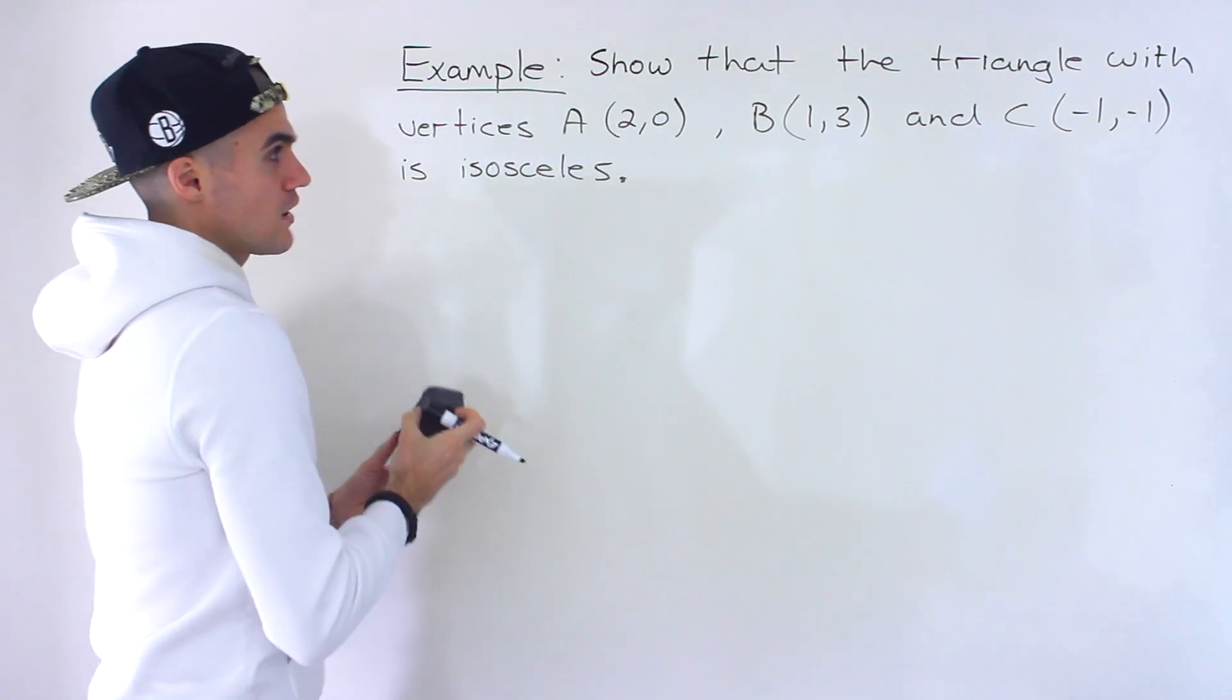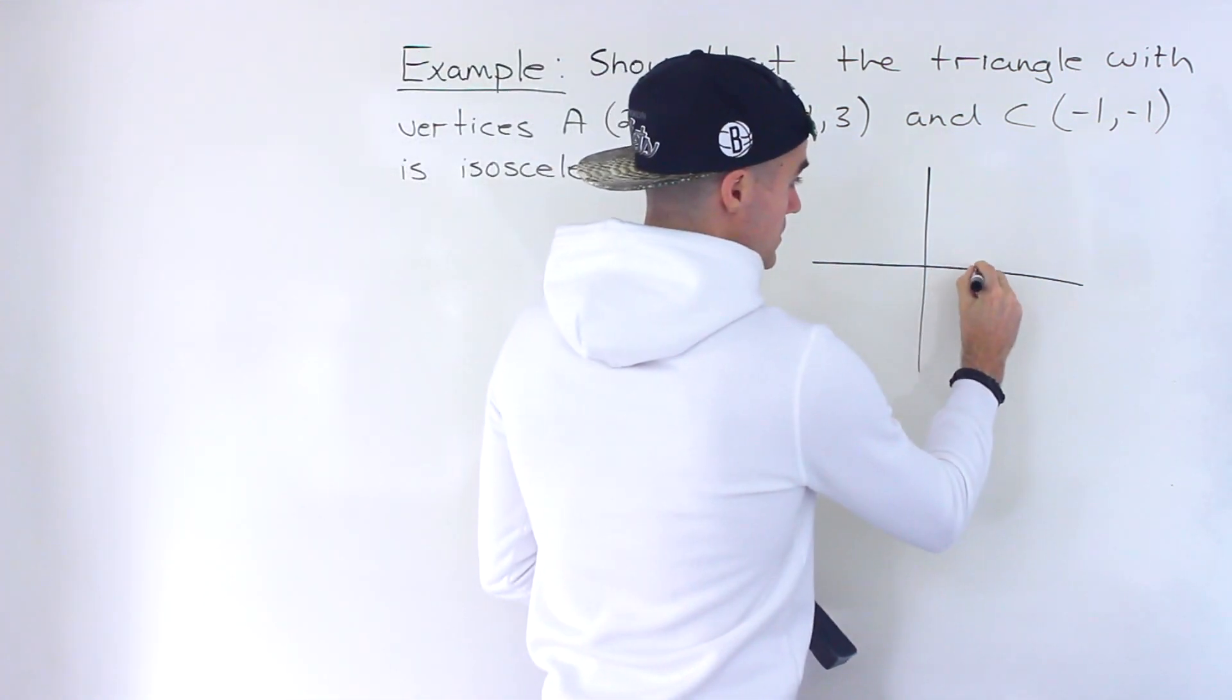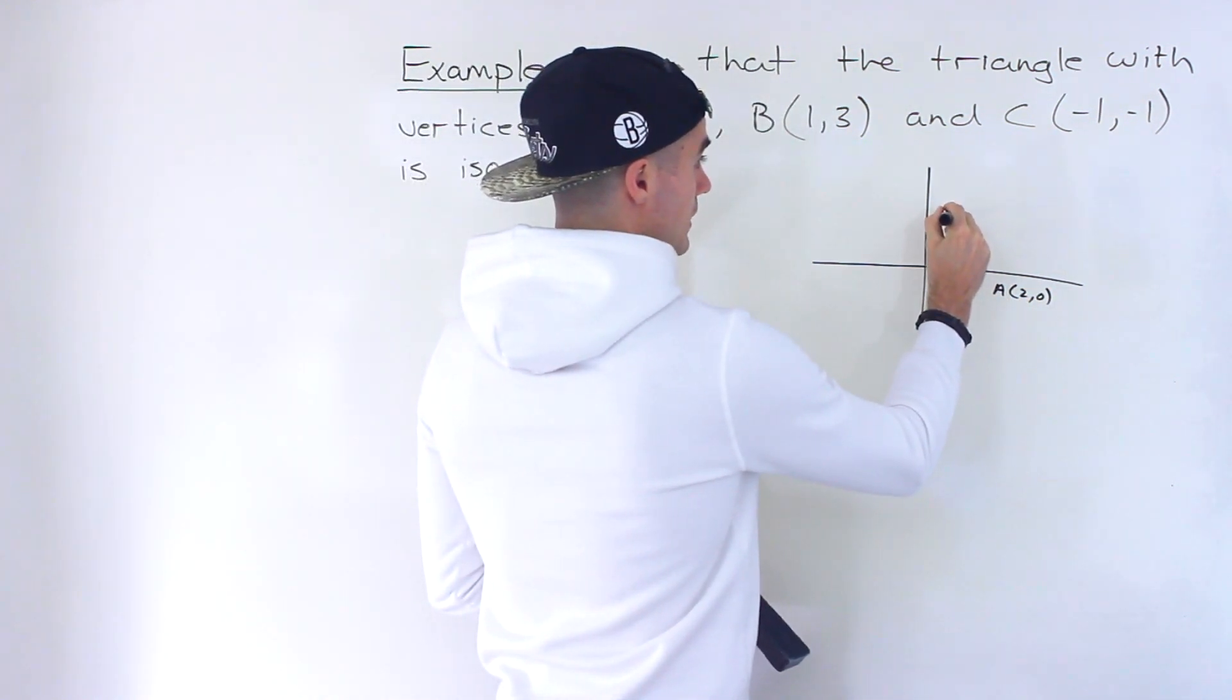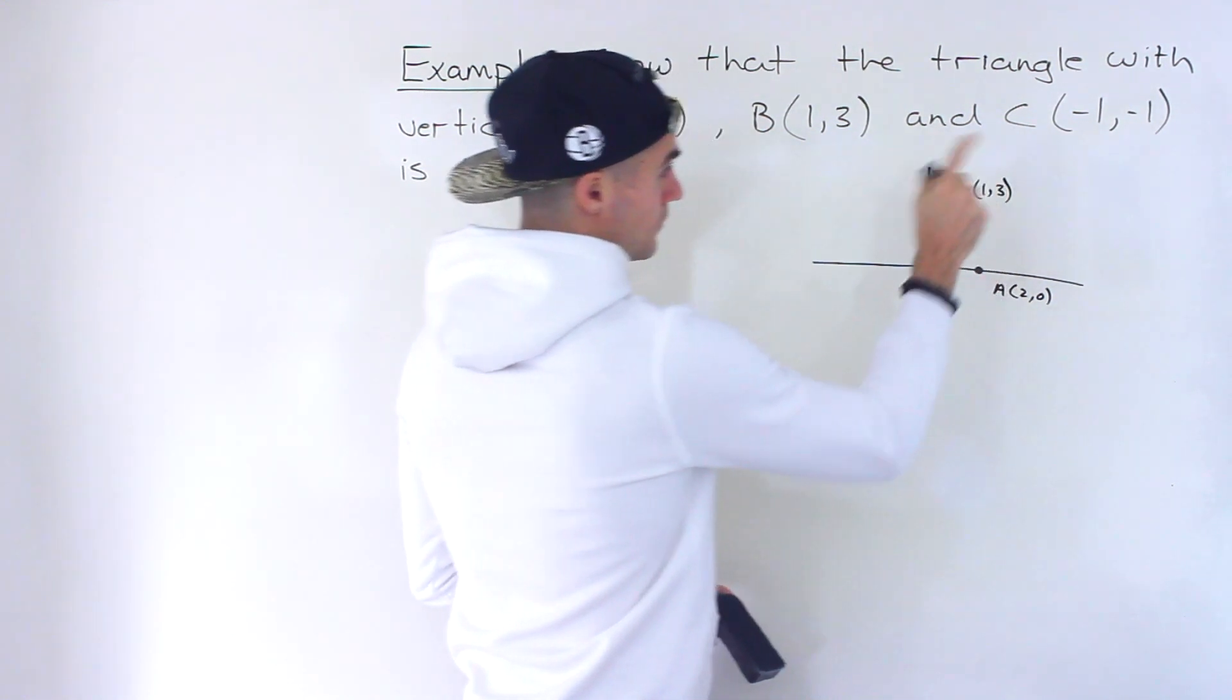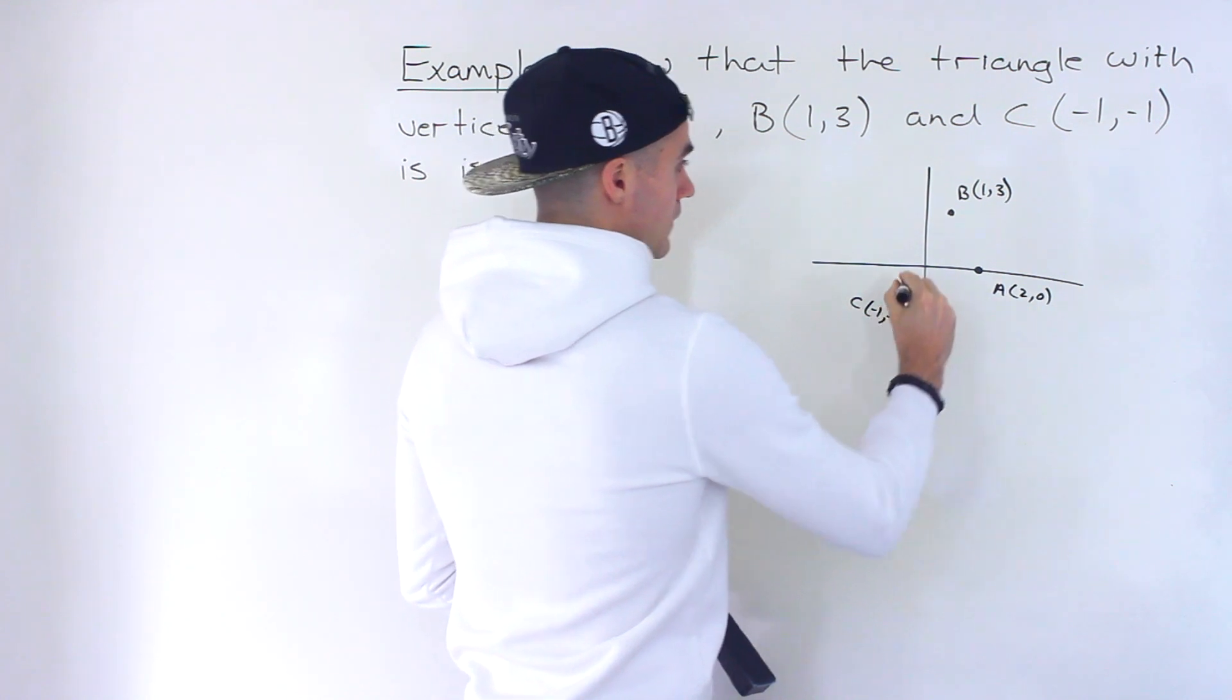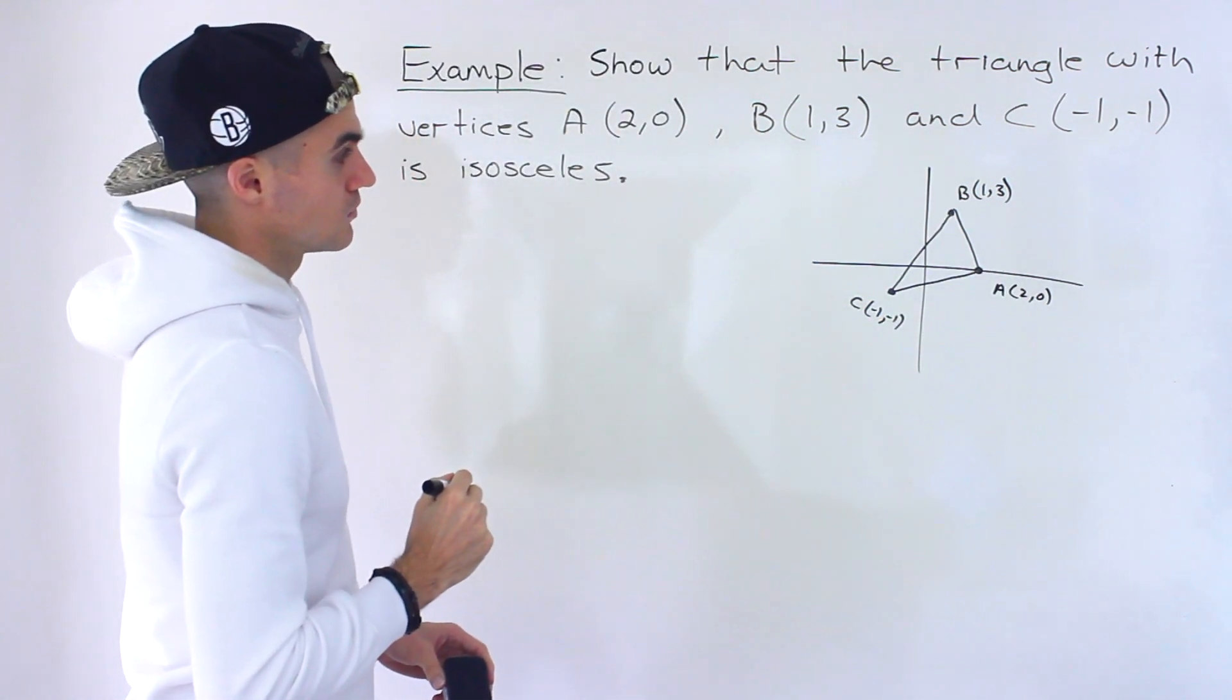So to first start off, let's actually draw a quick diagram of what's happening here. So we have (2,0) which is going to be over here, and then we have (1,3) which would be like up here. So this would be B(1,3), and then we have (-1,-1) which would be like down here. Right, so if we connect these, just a rough drawing, that's the triangle right there.